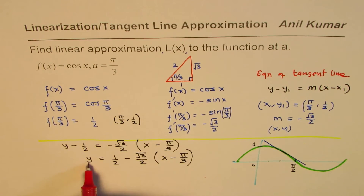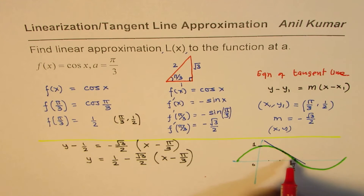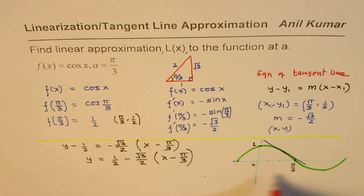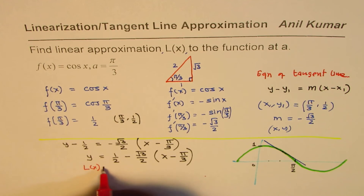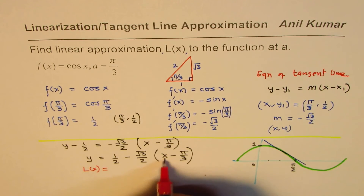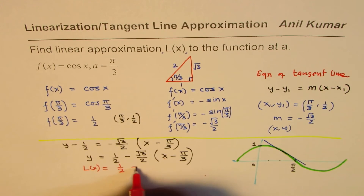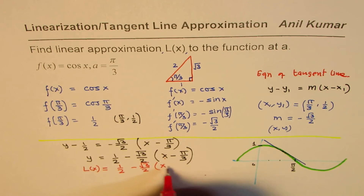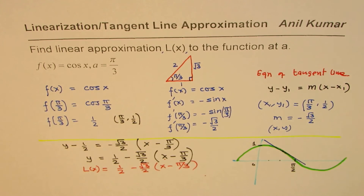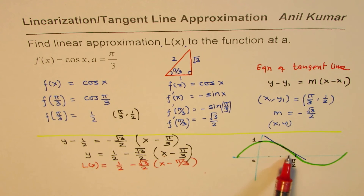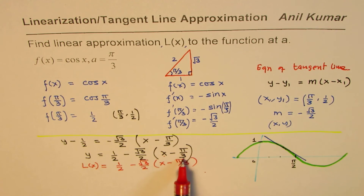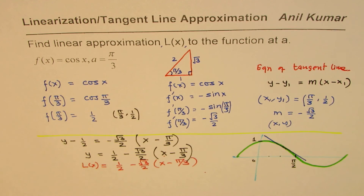We replace y with the approximate value, since the tangent line is close to the curve. The linear approximation formula is: L(x) = 1/2 - (√3/2)(x - π/3). With this formula you can approximate any point very close to π/3. I hope that helps — thank you and all the best.